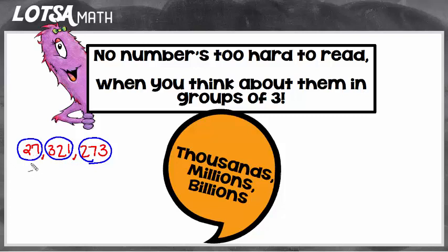When you think about these numbers, only think about them in the groups of three that the commas separate. Speaking of commas, here we see this comma and it says thousands, millions, billions. That's because when you see the first comma, that represents thousands. The second comma would represent millions. You can even make a little M and a little T under the comma to help you read the word, like I did.